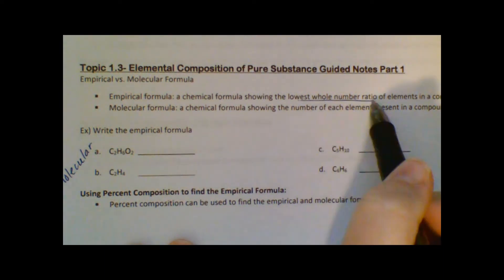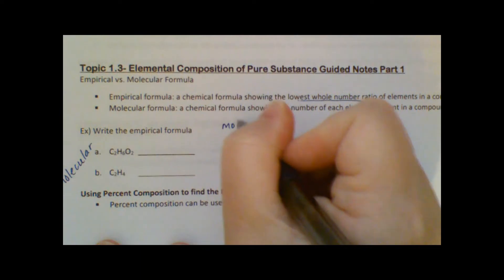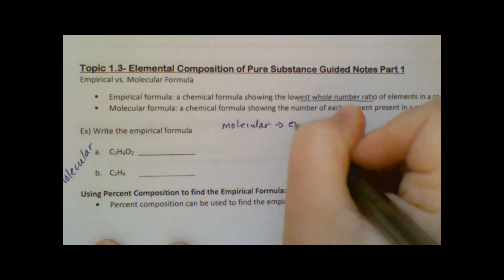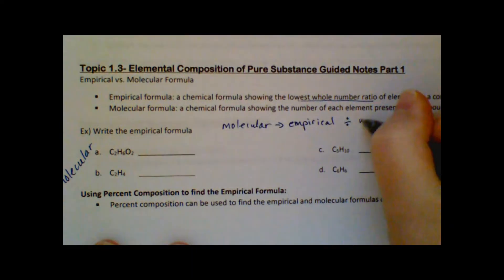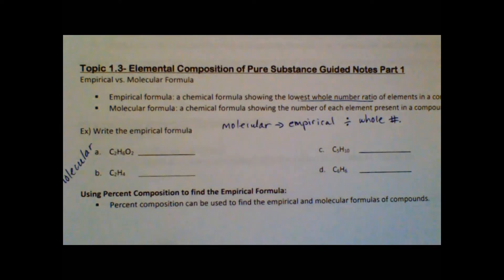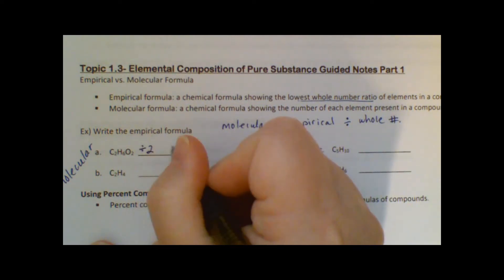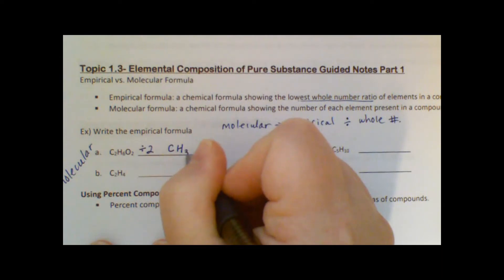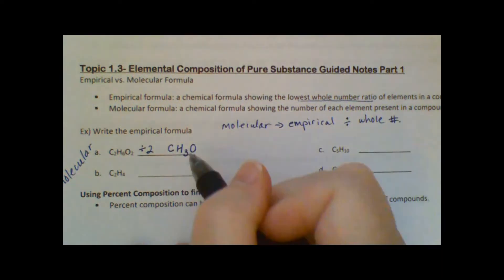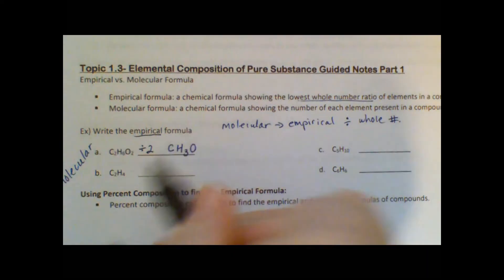The empirical formula takes the molecular formula and simplifies it to show just the whole number ratio of each element. To go from a molecular to an empirical formula, we divide all the subscripts by a whole number. For the first one, we can divide two, six, and two all by two, giving us C1H3O1 — we don't write the ones, but that is the empirical formula showing the ratio: one carbon, three hydrogens, one oxygen.